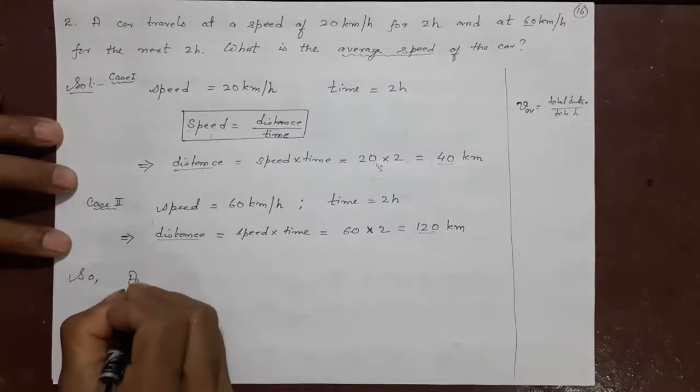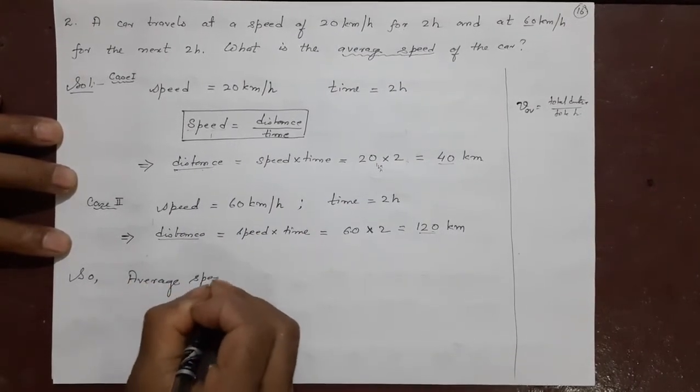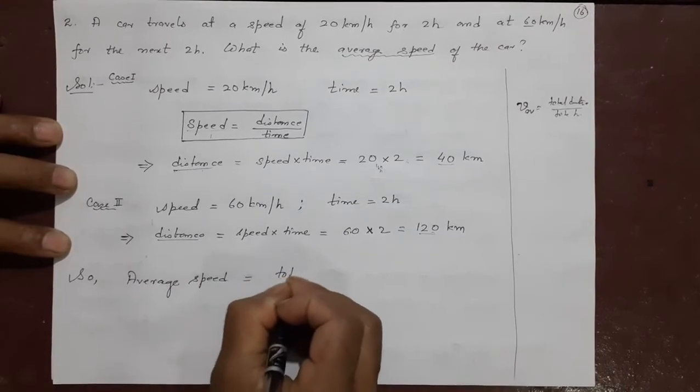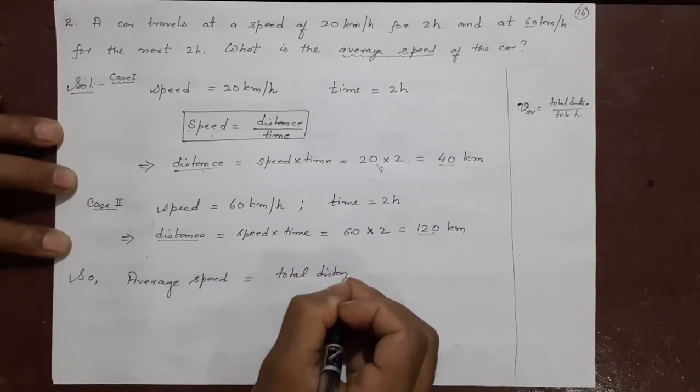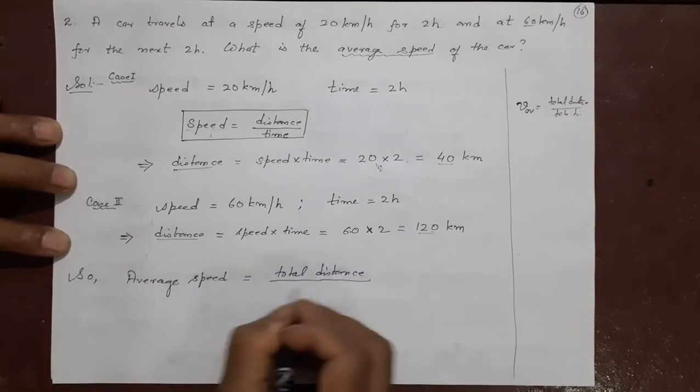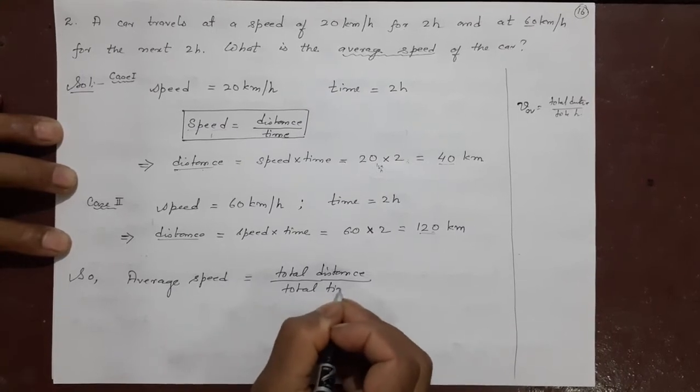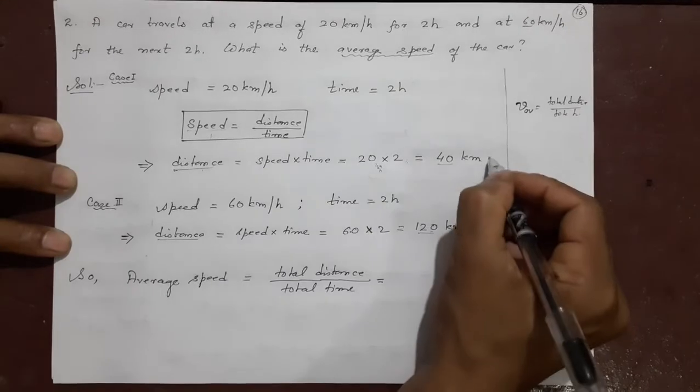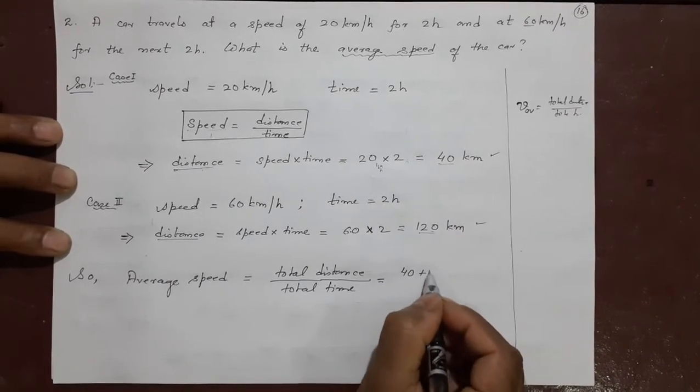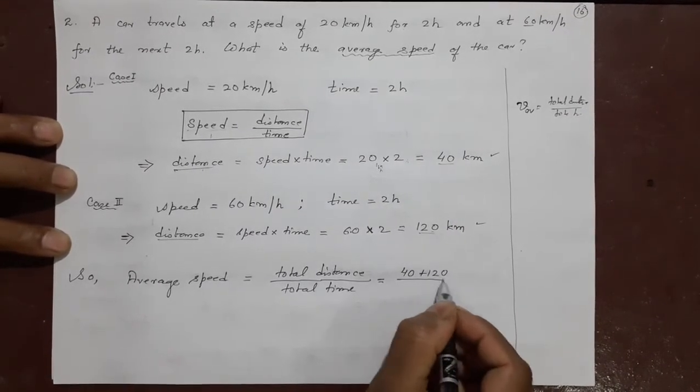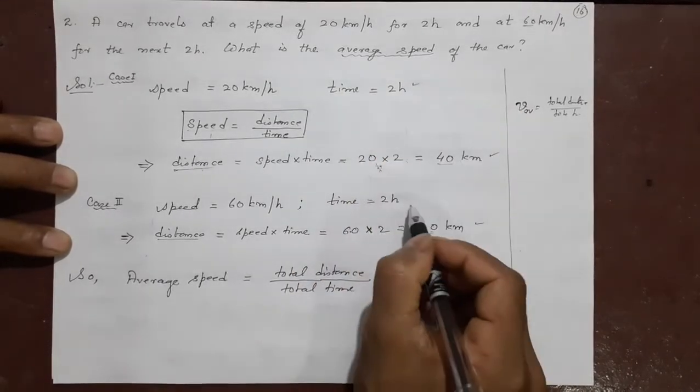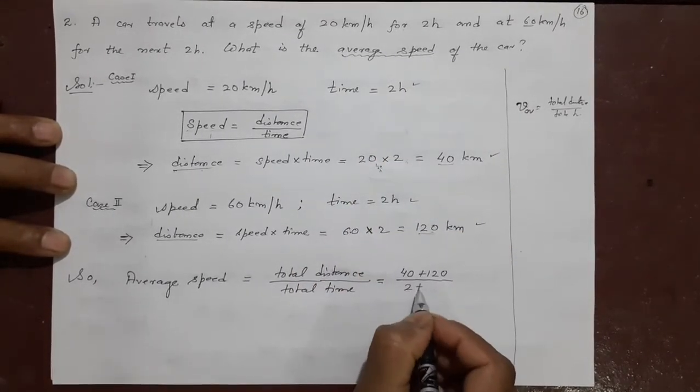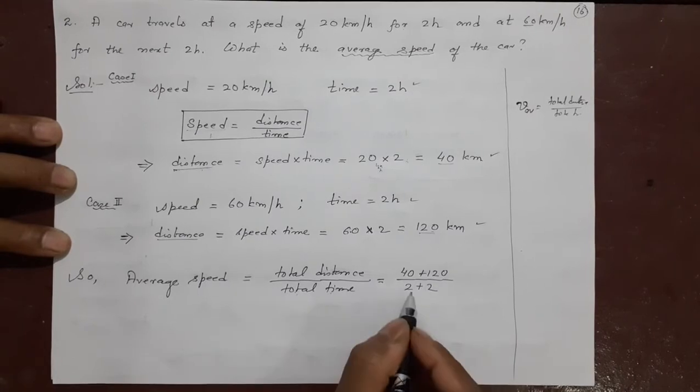Average speed. What is the formula? Total distance divided by total time. What is the total distance? Here it is 40, here it is 120. So 40 plus 120. What is the total time? It is 2 hour. Here it is 2 hour. 2 plus 2. Total time is 2 plus 2. Total distance is 40, 120.